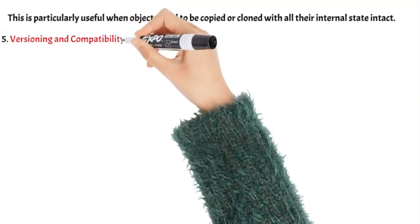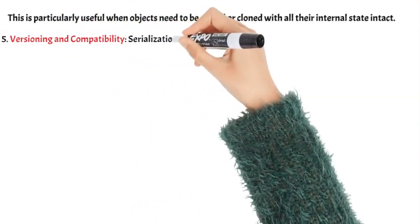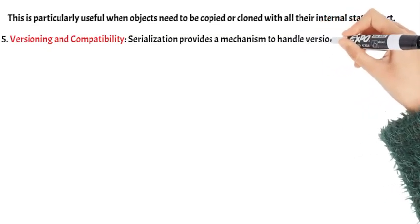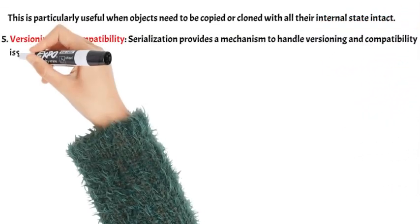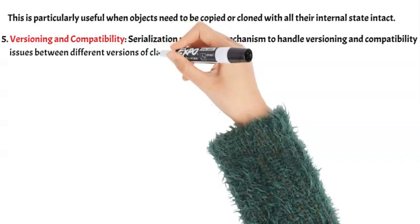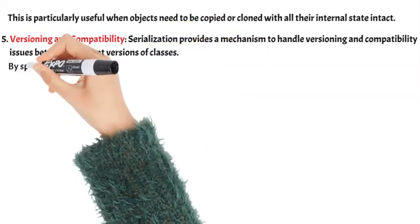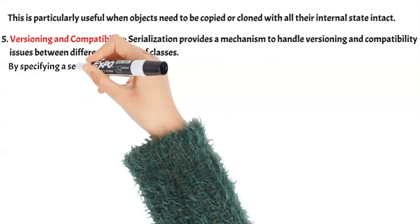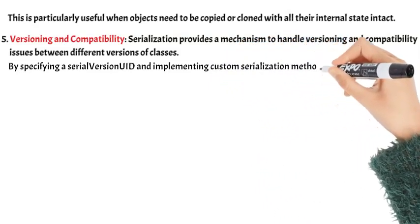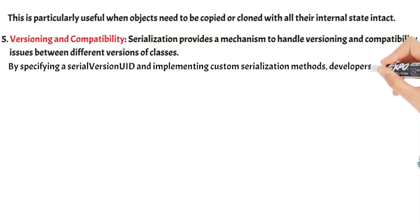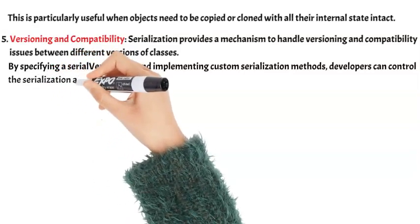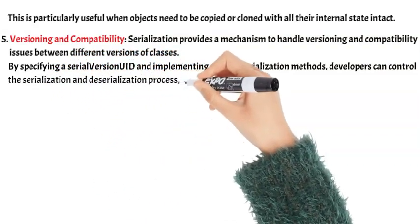Versioning and compatibility: Serialization provides a mechanism to handle versioning and compatibility issues between different versions of classes. By specifying a serialVersionUID and implementing custom serialization methods, developers can control the serialization and deserialization process, ensuring compatibility between different versions of serialized objects.